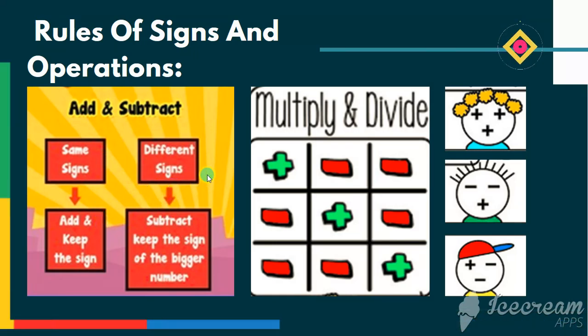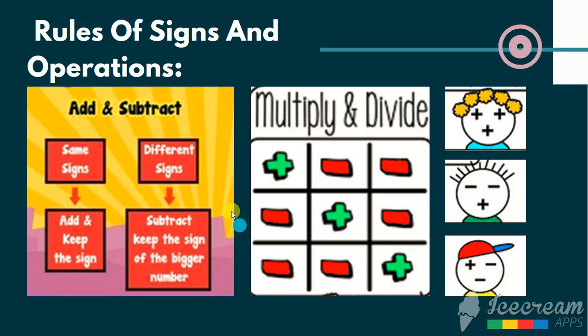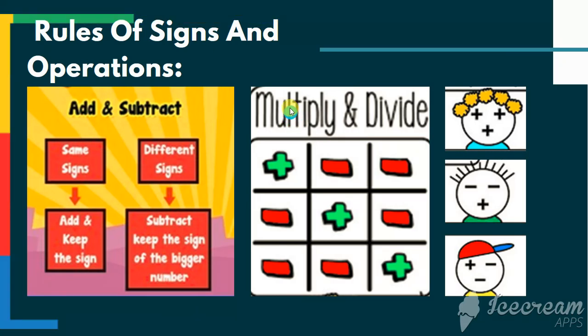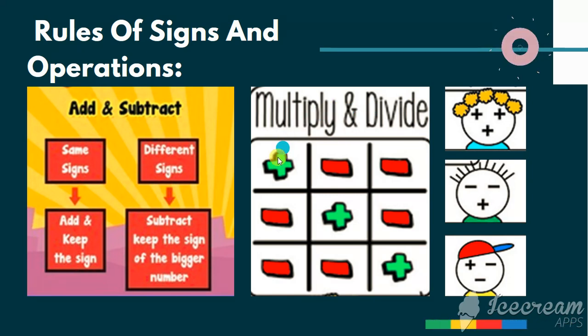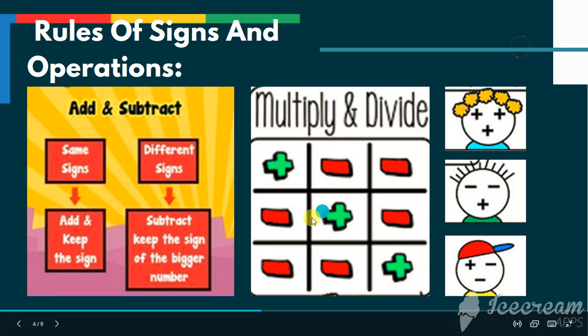Different sign, subtract and keep the sign of the bigger number. If you multiply or divide, so the sign game will be tic-tac-toe. Look, plus plus will be plus, minus plus will be minus and minus minus will be plus.